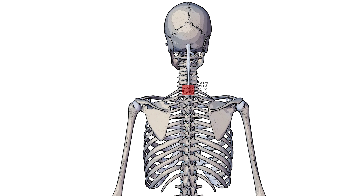In addition to the spinous processes, it also originates on the nuchal ligament. The nuchal ligament originates from the external occipital protuberance and comes all the way down to C7, running along the back of the spinous processes. The inferior portion of the nuchal ligament is another origin of the rhomboid minor muscle.